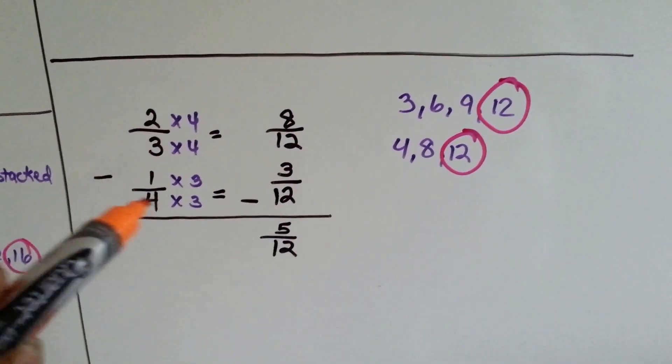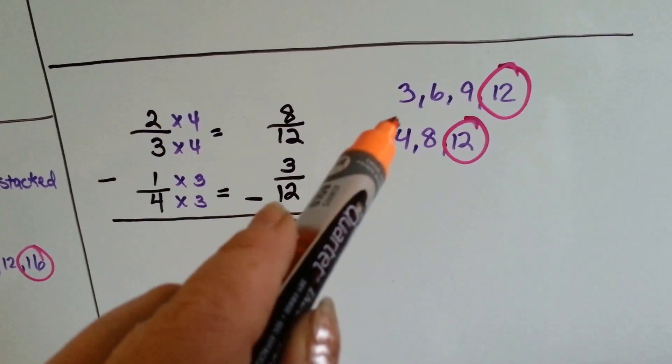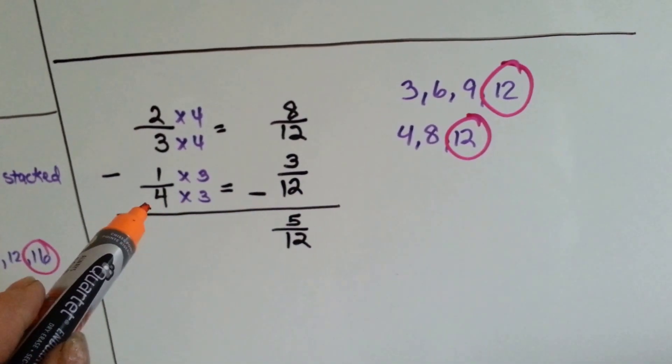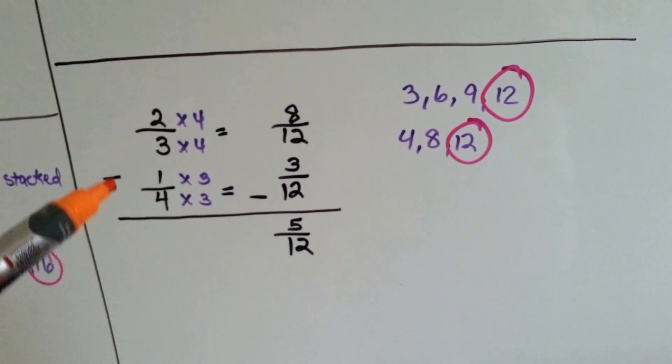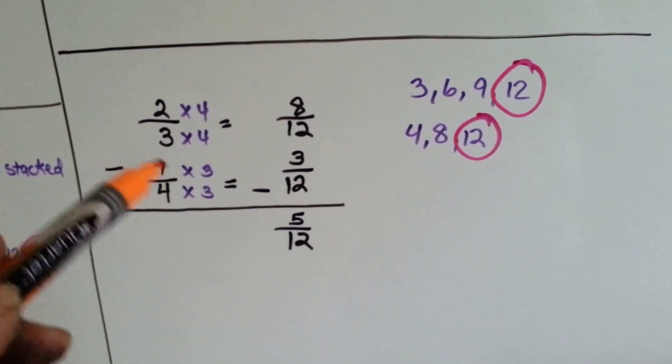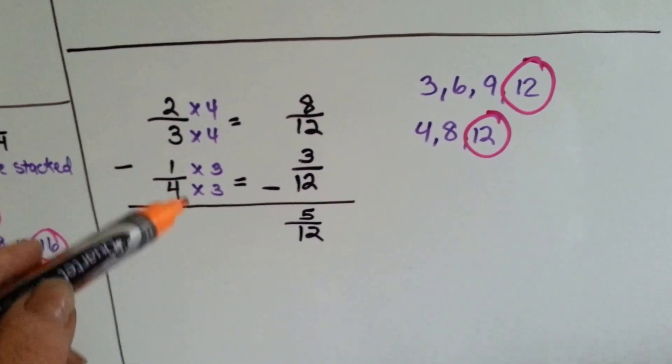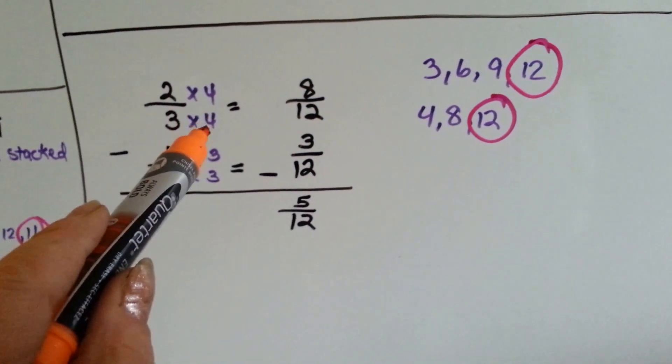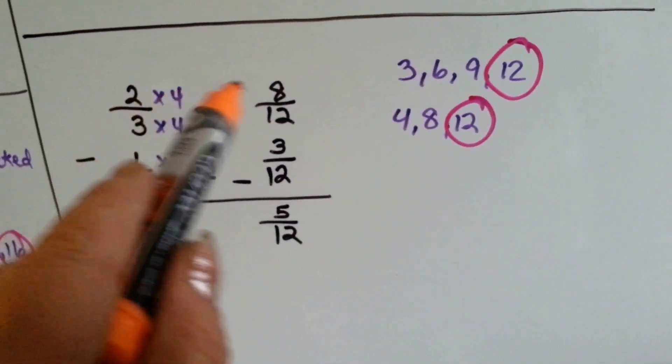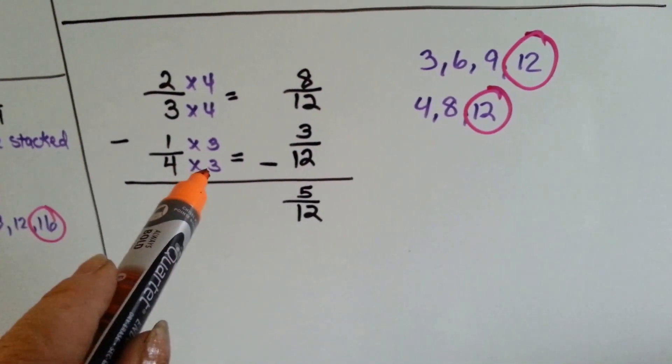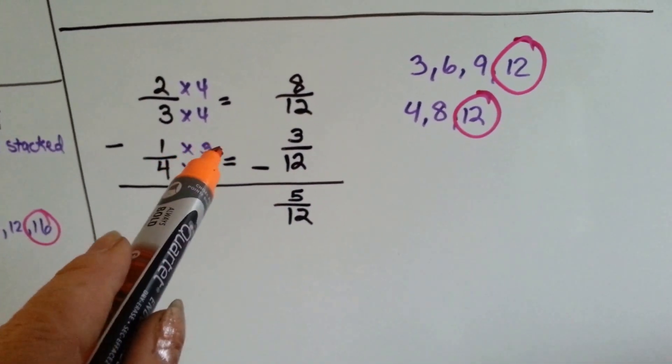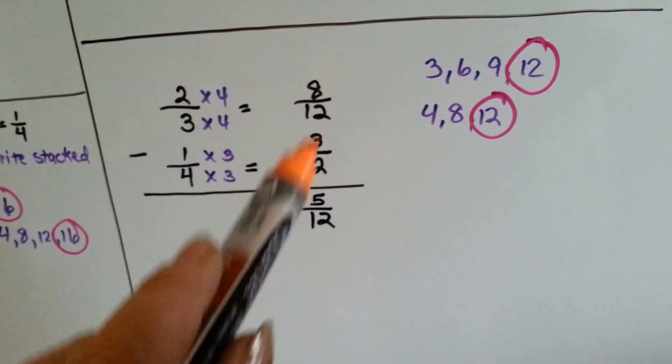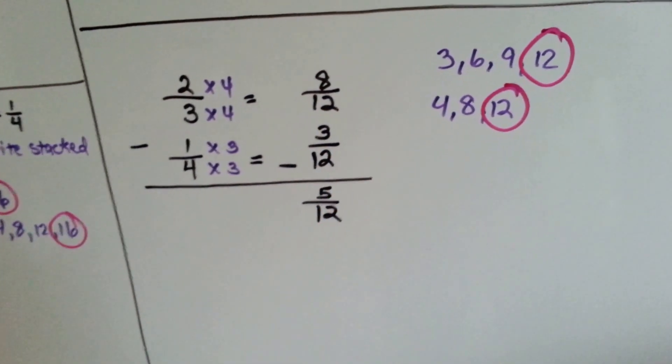Let's do a subtraction. 2/3 minus 1/4. Whose house can they meet at? The smallest one is 12, because we don't want to do any extra work. They could meet at 24's house if you want to do more work, or even a bigger number's house like 120, then you'd really do a lot of work. So they meet at 12's house. What does 3 need to get to 12's house? It needs to be multiplied by 4. 2 gets jealous, so he gets multiplied by 4. 4 needs to be multiplied by 3. 1 wants to get multiplied by 3, and he does. So now we have 8 take away 3, which is 5, and it's over the same denominator of 12. So the answer is 5/12.